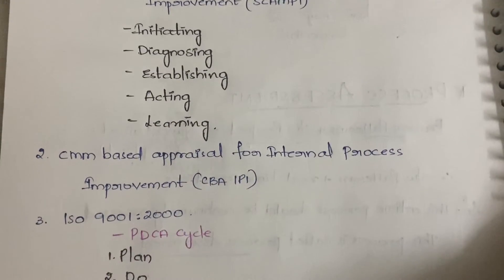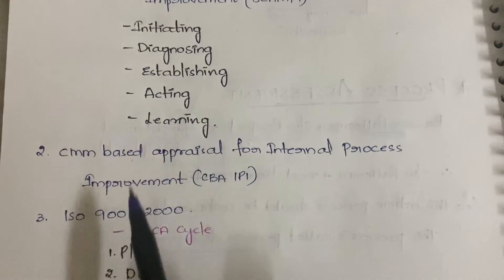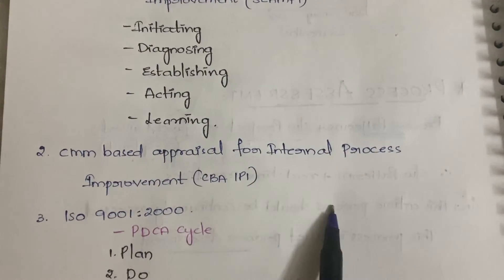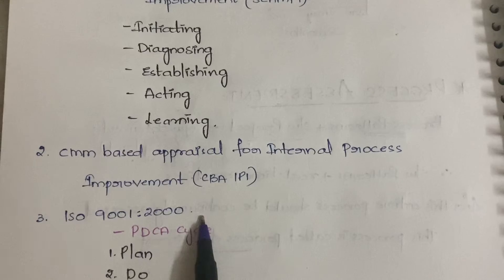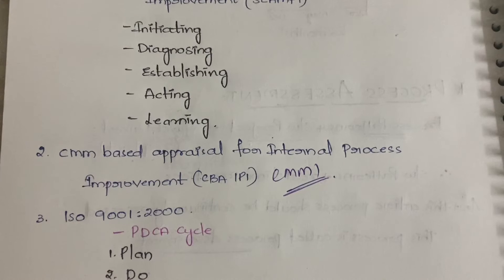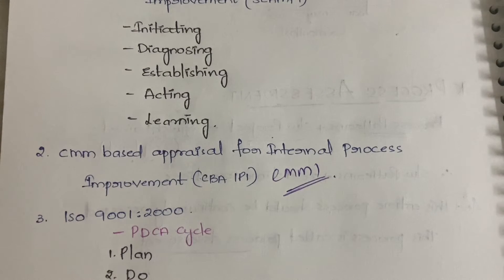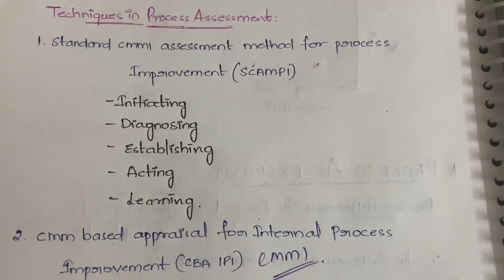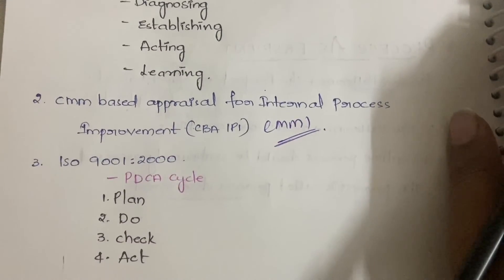The second technique is CMMI-Based Appraisal for Internal Process Improvement, CBA-IPI. Here you use the CMMI model to do the assessment of the software. These three techniques are not critically important for a short answer — it is enough to understand what process assessment is and explain the diagram. But if you're answering for 10 marks, you'll need to elaborate further.